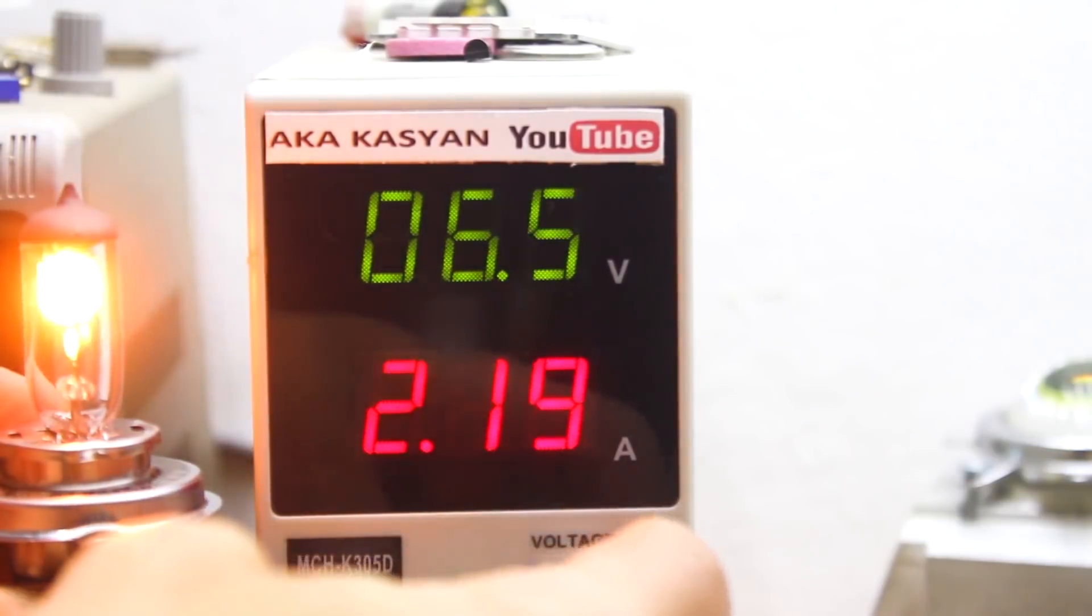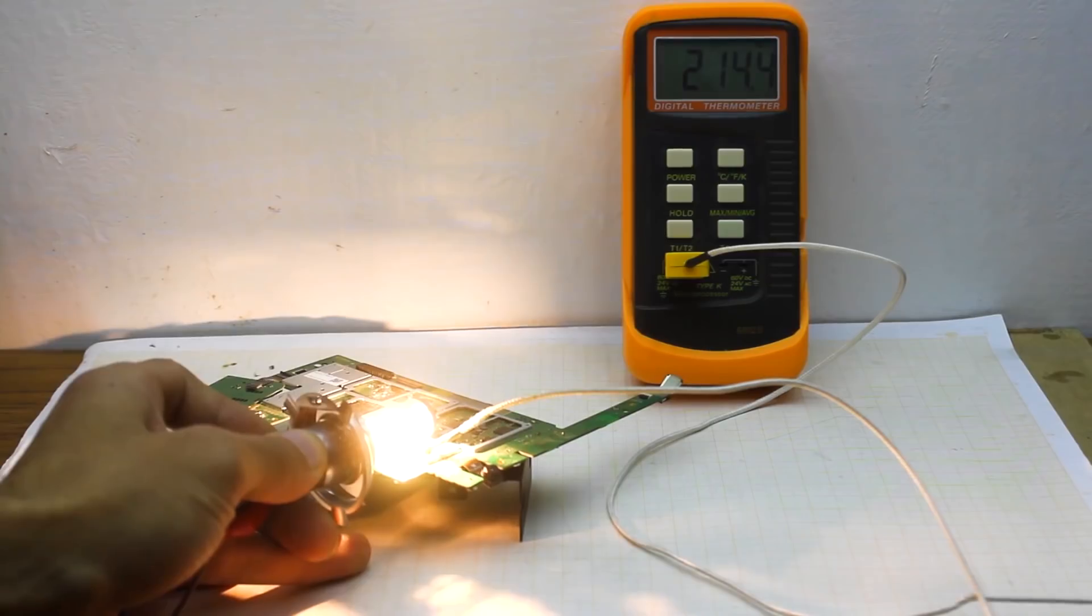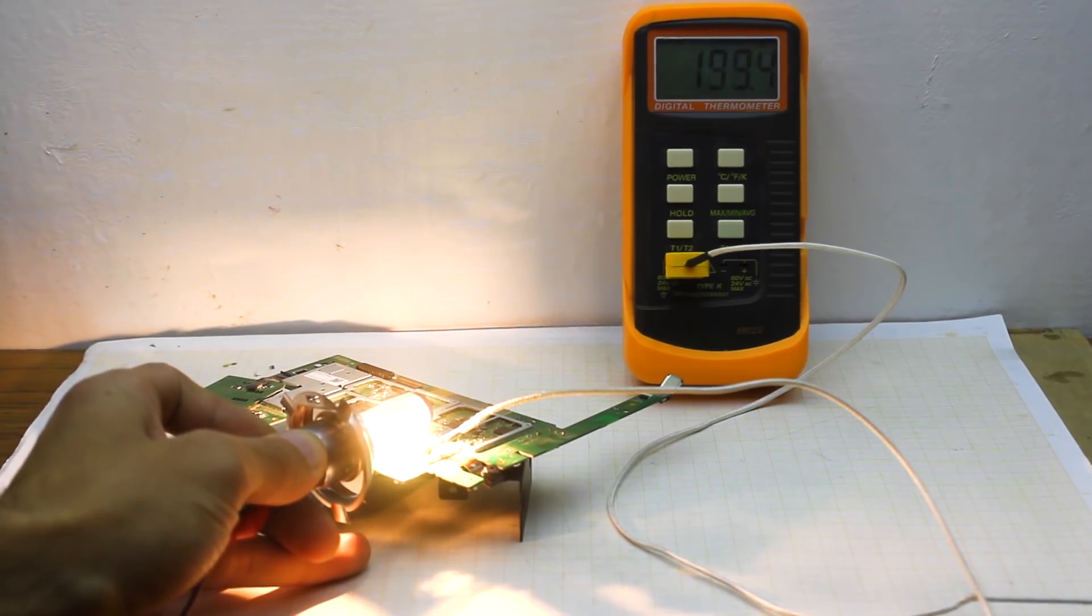By adjusting the voltage, in fact, we can control the heating temperature. Remember that the halogen will be very hot after a turn off of power for quite a long time, so be careful.